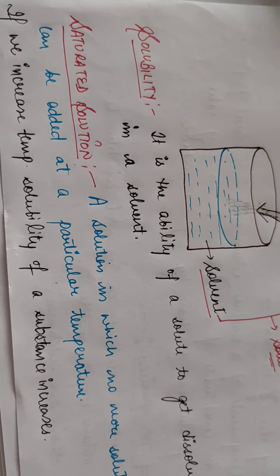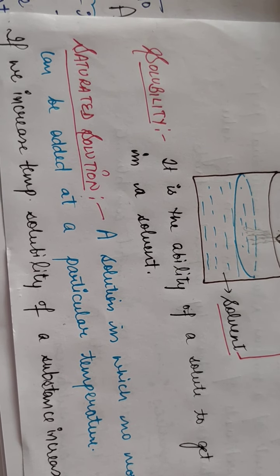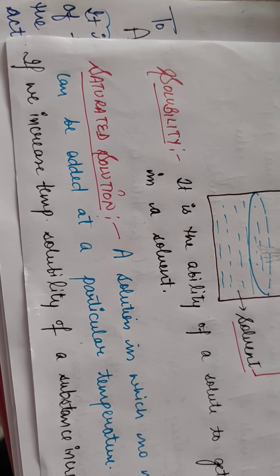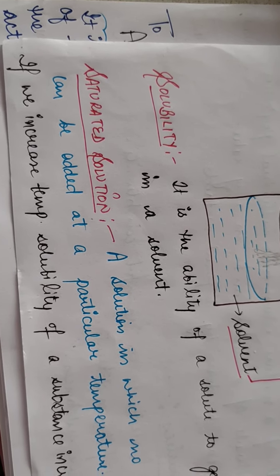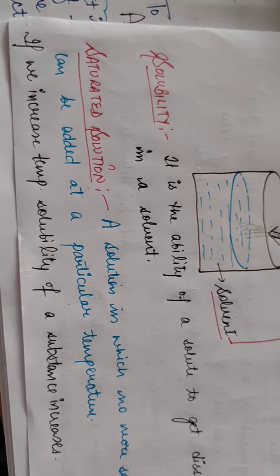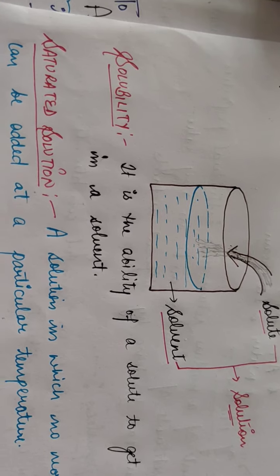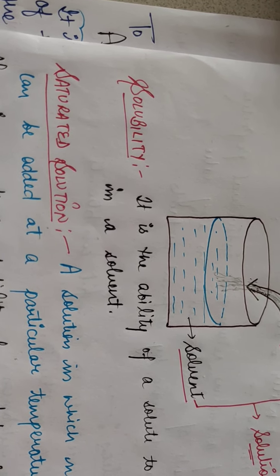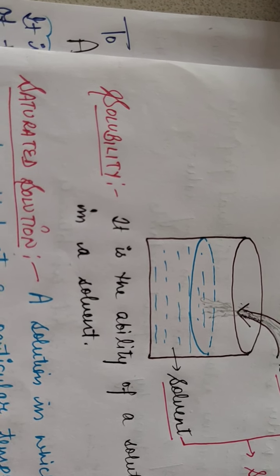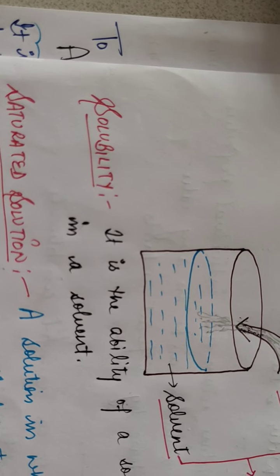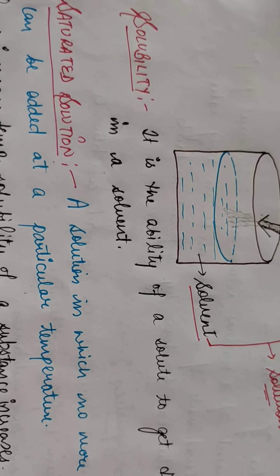A saturated solution is a solution in which no more solute can be added, provided it is at a particular temperature — meaning you should not heat or cool the solution. We must specify temperature because temperature affects solubility. If you dissolve sugar in warm water versus cold water, it dissolves more easily in warm water. So with increasing temperature, solubility increases, and with decreasing temperature, it decreases. That is why in the definition of saturated solution, we say it is at a particular temperature.